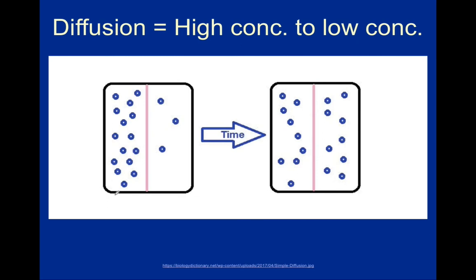Simple diffusion is a type of nonspecific transport because all substances that are small enough will be able to cross the cell membrane by it. This diagram demonstrates substances moving from high concentration to low concentration through a selectively permeable membrane. Over the course of time, the area of high concentration will cause particles to spread out towards the area of low concentration, continuing until each side has an equal number of particles. Solutions are striving for equilibrium because as long as there's a concentration gradient, substances will want to move down it.